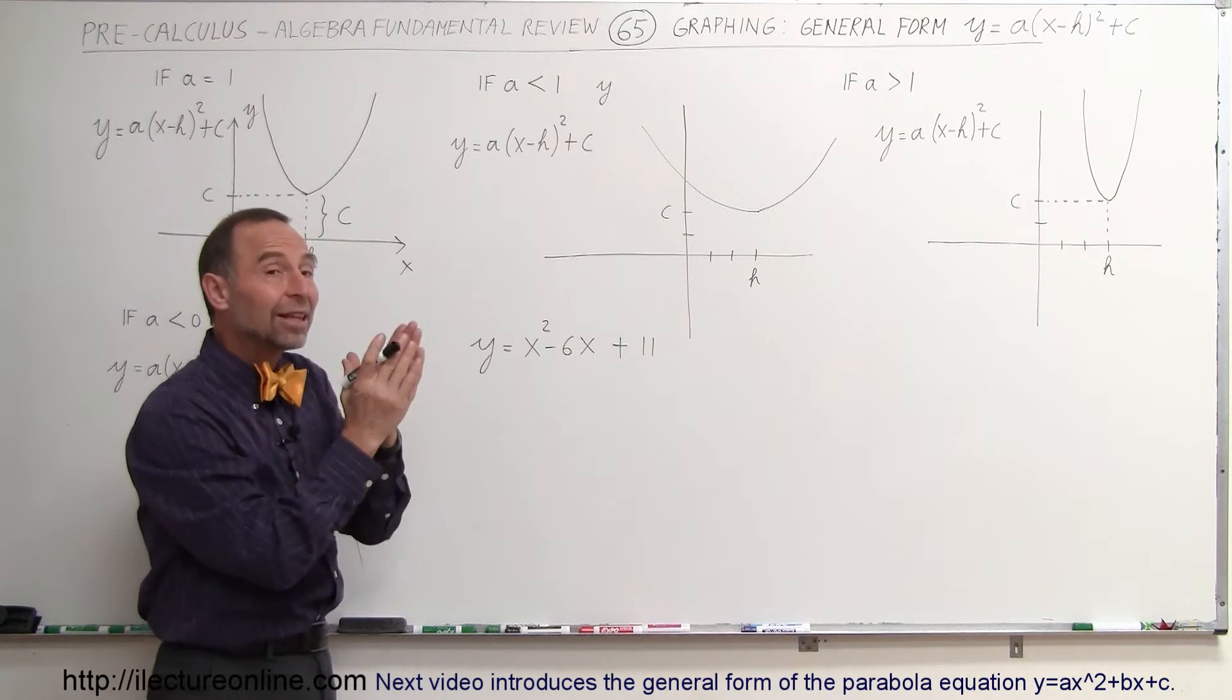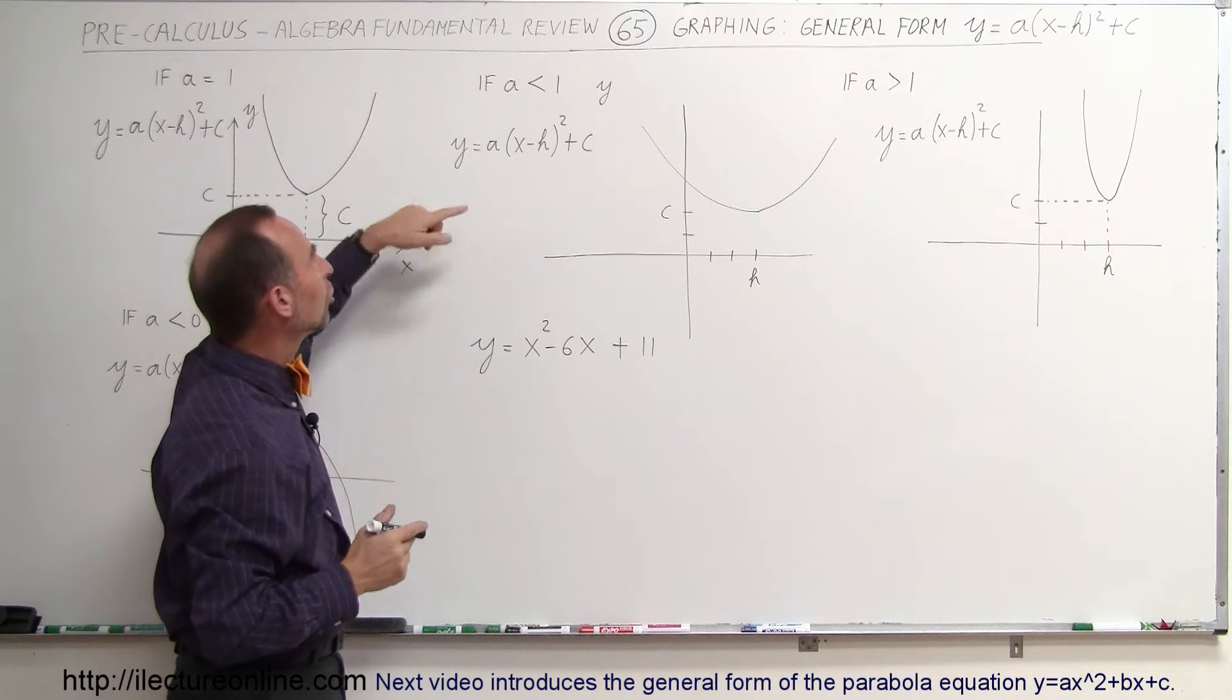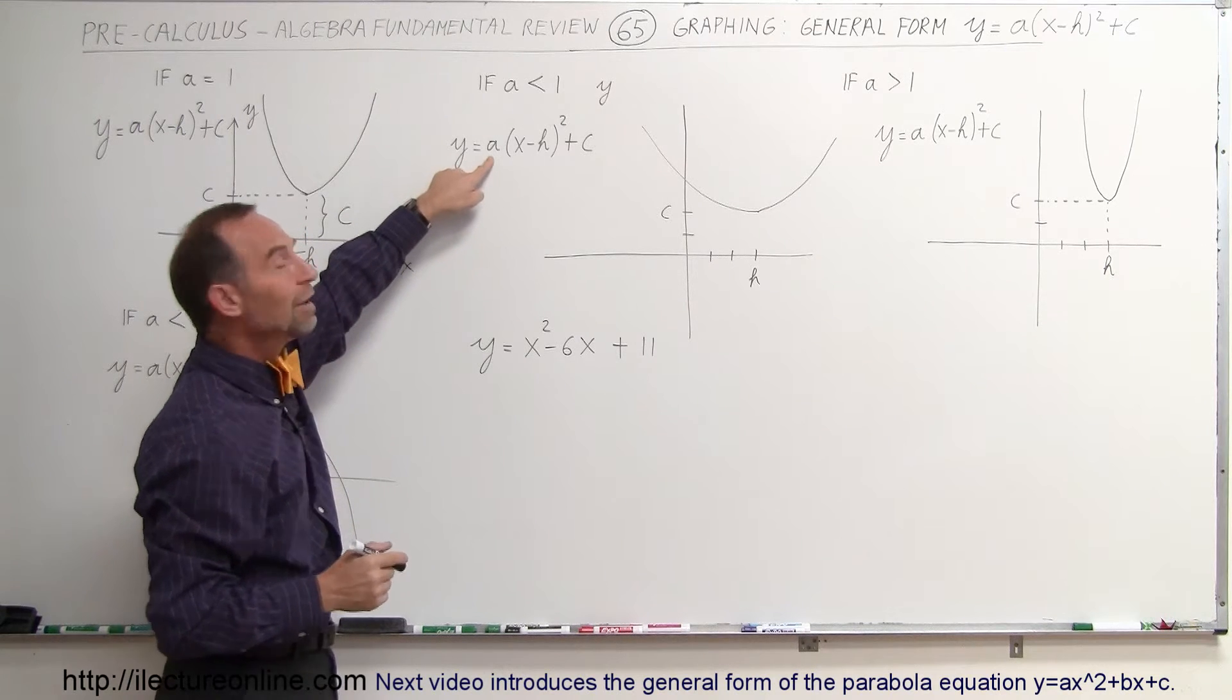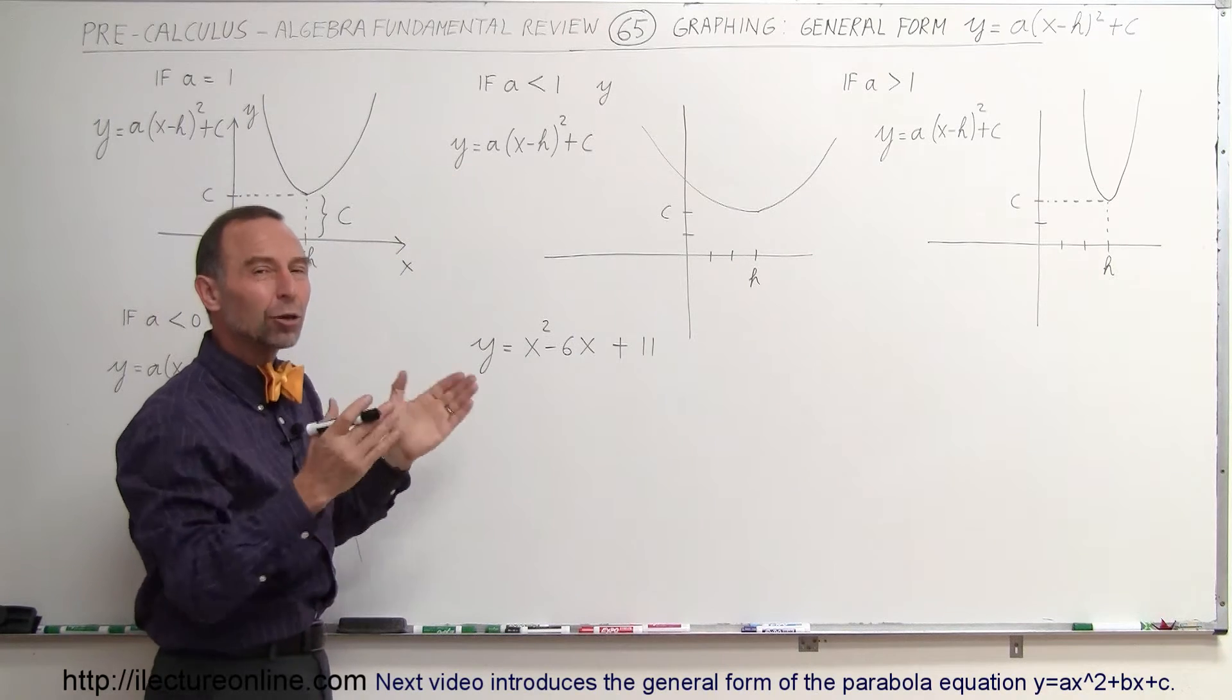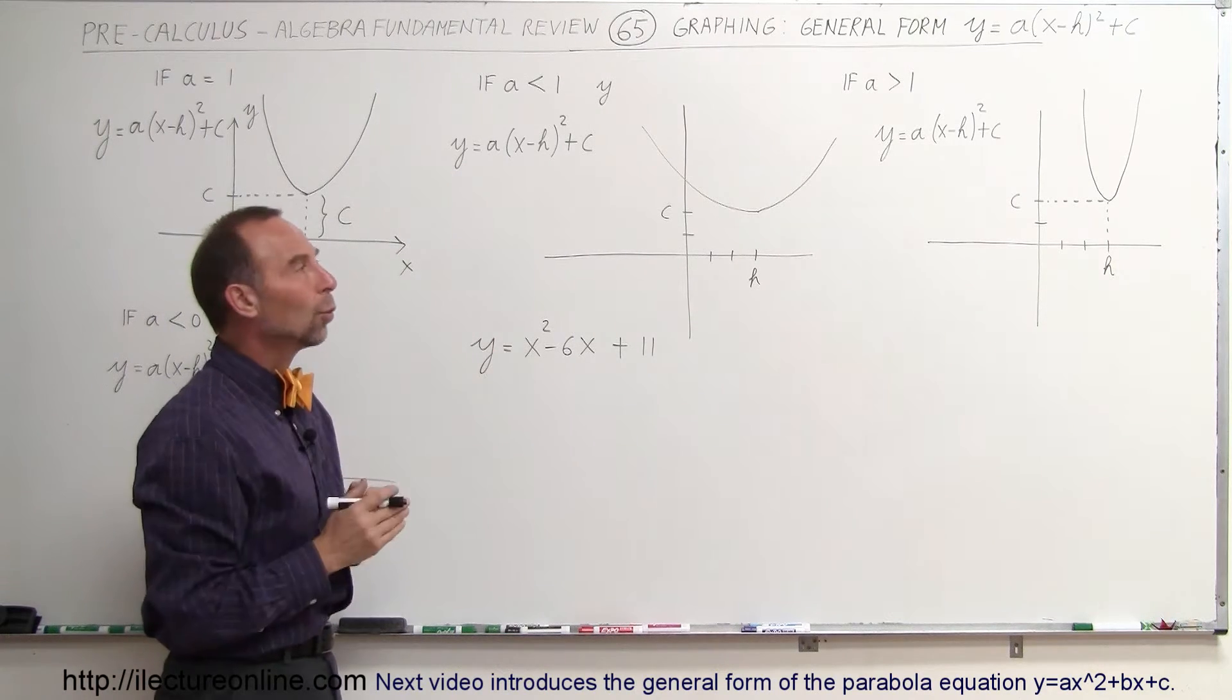What happens is the graph will become wider. It'll take longer for the value of y to grow if a is a smaller number. So you plug in values for x, but if a is small, it'll take longer for y to grow, so the parabola will get wider.